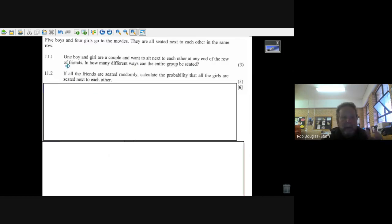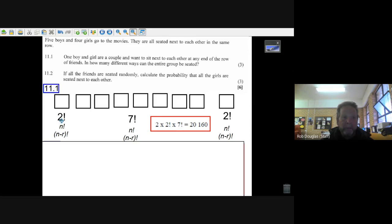Well, what do you do with this? You've got five and four - there's nine people all together - but one boy and girl, they want to sit next to each other. So what we do is we take two of those people and we put them at the end of the rows.